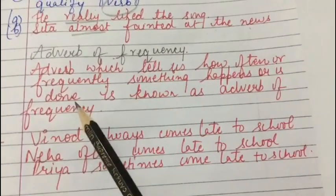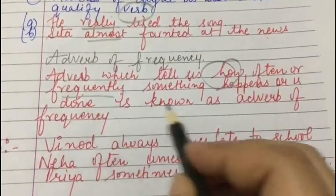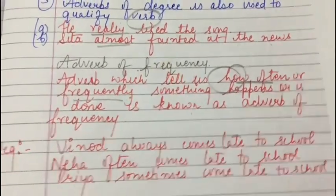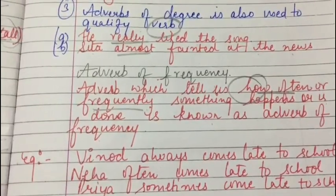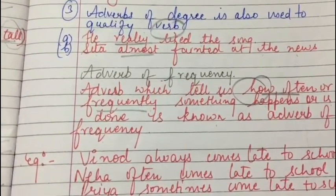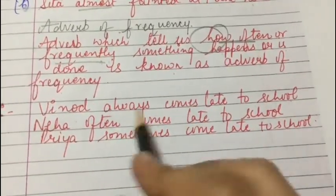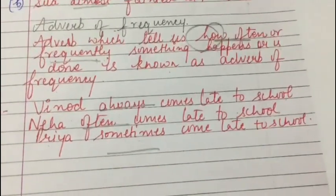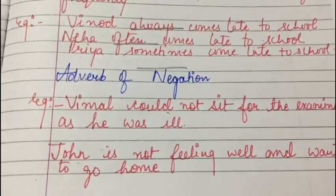Next is adverb of frequency. An adverb which tells us how often or frequently something happens or is done is known as adverb of frequency. Students should not confuse adverb of time with adverb of frequency: an adverb of time answers the question 'when,' while an adverb of frequency answers 'how often' or 'how frequently.' Examples: 'Vinod always comes late to school,' 'Neha often comes late to school,' and 'Priya sometimes comes late to school.' The adverbs always, often, and sometimes tell us how frequently something is done.